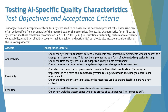The next quality characteristic is flexibility, which relates to the freedom of moving things and coping in contexts outside the initial specification. This may be implemented as automated regression testing executed in the changed operational environment. Acceptance criteria include checking the time the system takes and the resources used to change itself to manage a new context. The more flexibility you have, the better adaptability as well.